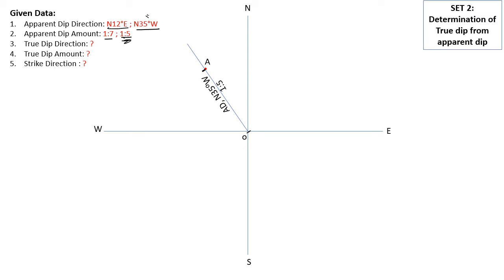Now I will plot north 12 degrees east and mark it as apparent dip north 12 degrees east. I will measure 1 is to 7 — that is 7 centimeters from this point — and name that point as point B.